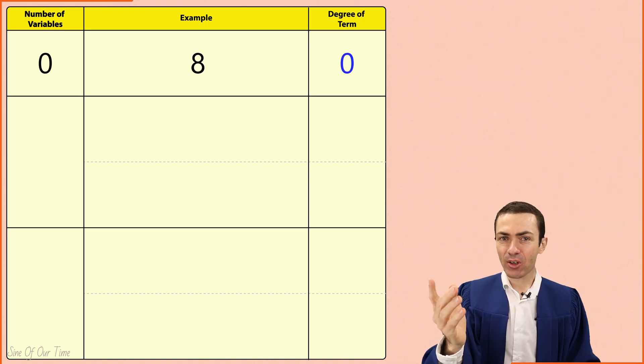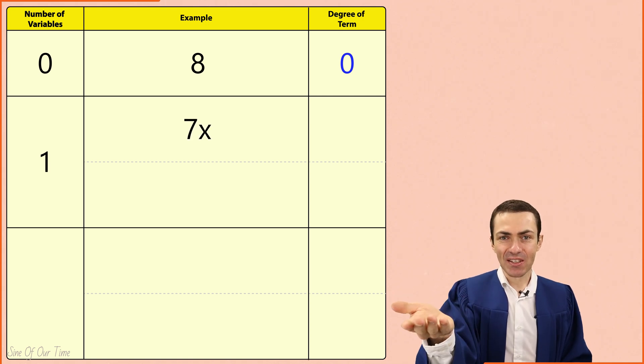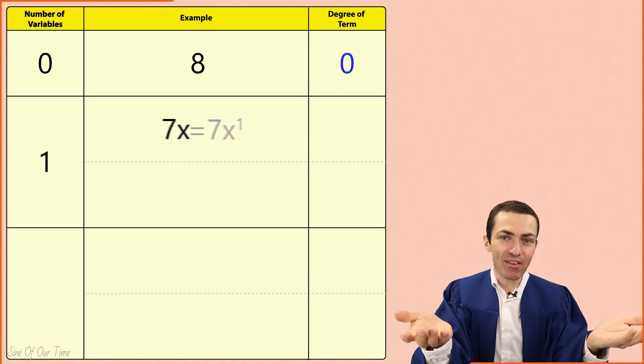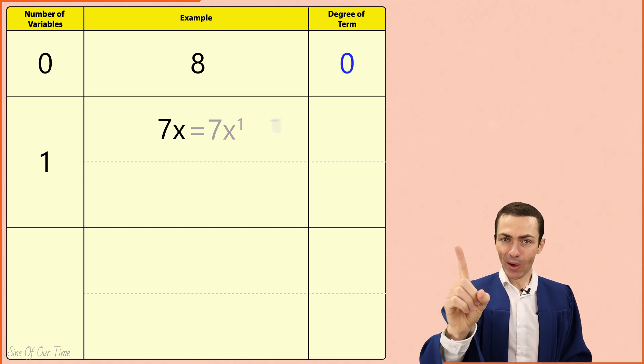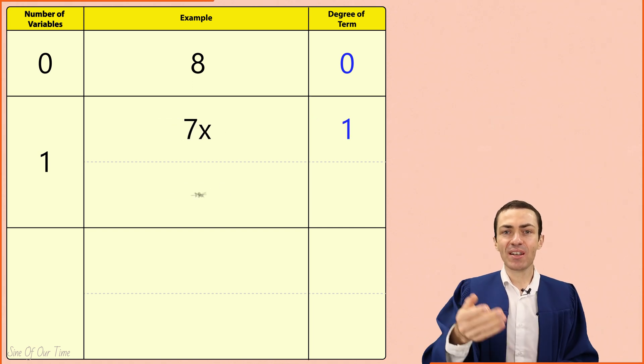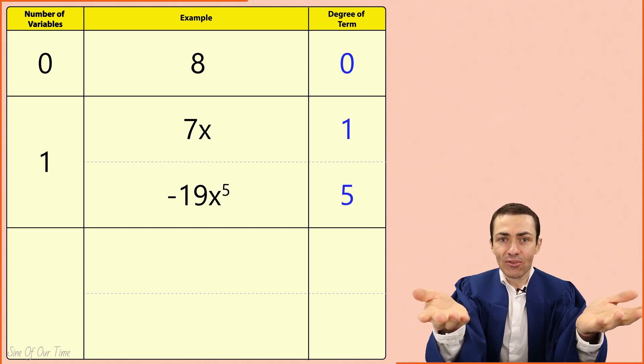Now let's consider terms that contain one variable. For example 7x which can be written as 7x to the power of 1 means that the degree of this term is 1. Or what about negative 19x to the power of 5? The degree of this term is simply 5.